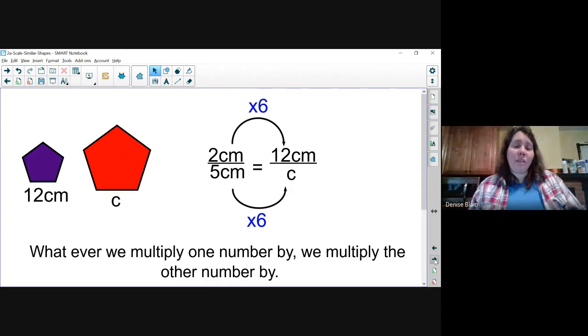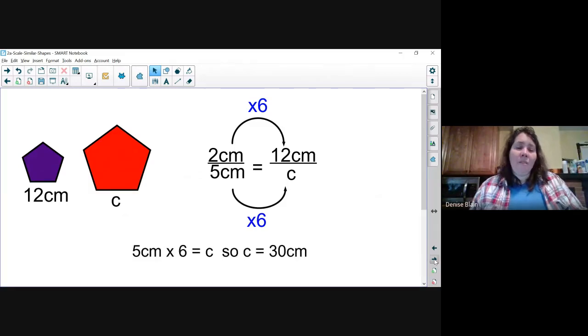2 times 6 is 12. Whatever we multiply the top number by, we multiply the bottom number by the same thing. 5 times 6 is c. Our missing measurement of the red pentagon is 30 centimeters.